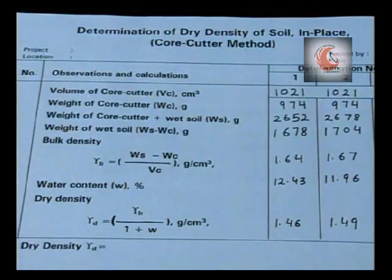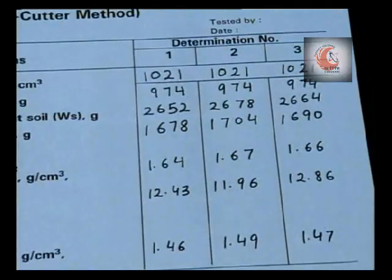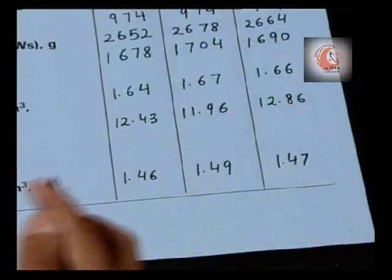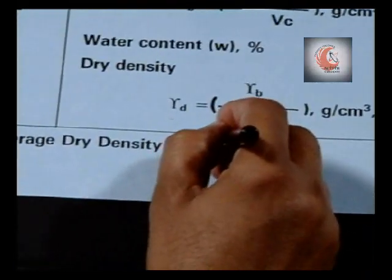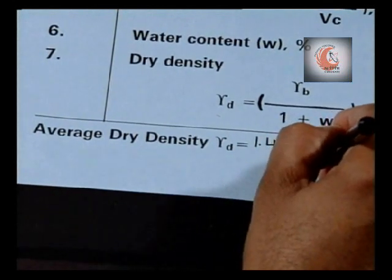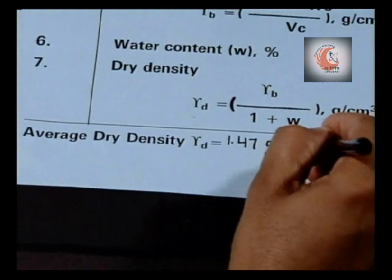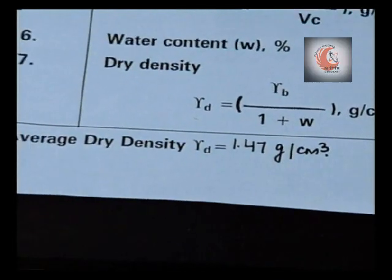Repeat the process for two more determinations and record the corresponding values. The average dry density of three determinations is 1.47 gram per centimeter cube, which is the dry density of the soil. So friends, we can determine the in-situ dry density of a soil using core cutter method as per standard procedure.